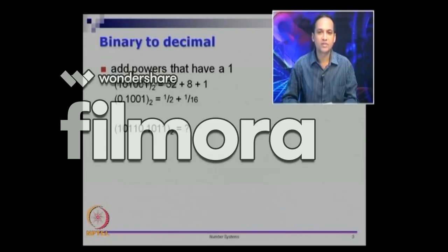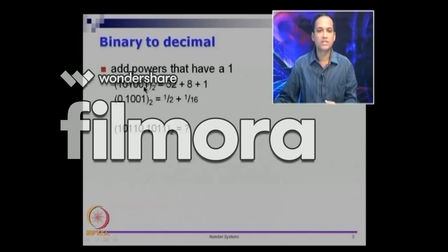How do we convert binary to decimal? You take the number and then you assign weights to it. You always start from the right side, giving increasing powers of 2 starting with 2 power 0. So this is 2 power 0 into 1, plus 2 power 3 into 1, plus 2 power 5 into 1 — that is the same as 41.